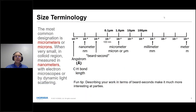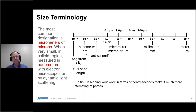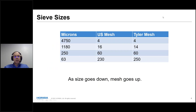Let's start with size terminology. Most often we talk about particle sizes in the range of microns — one millionth of a meter. As you get much smaller, you go down to the nanometer size range, which comes up in nanoparticles. As you go to large particles, you might see millimeters used, but microns comes up most often. I always like to throw in that a beard second is a fun unit of length — 10 nanometers — the distance an average beard grows in one second.